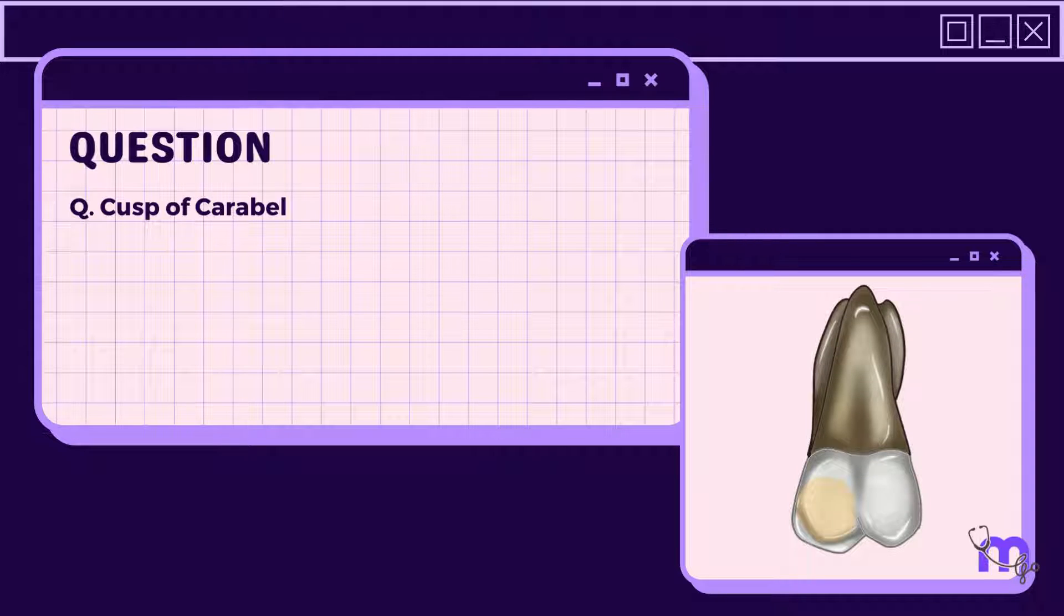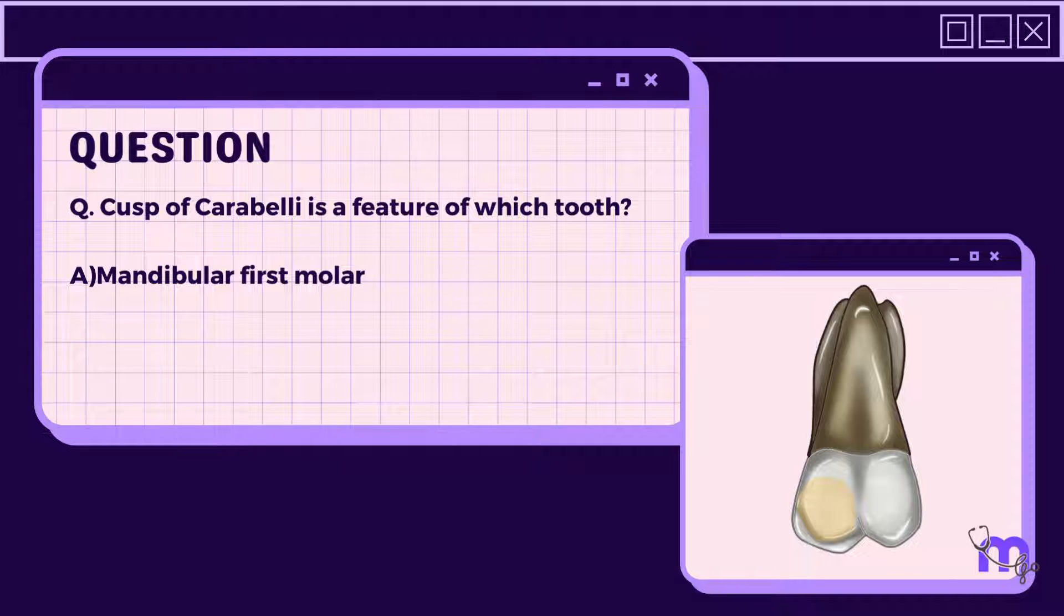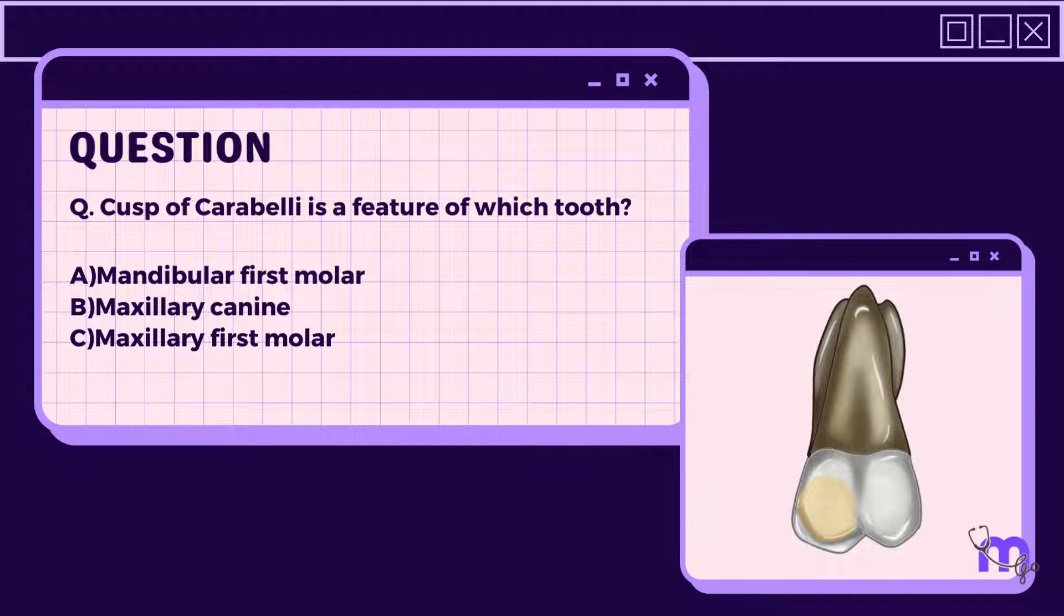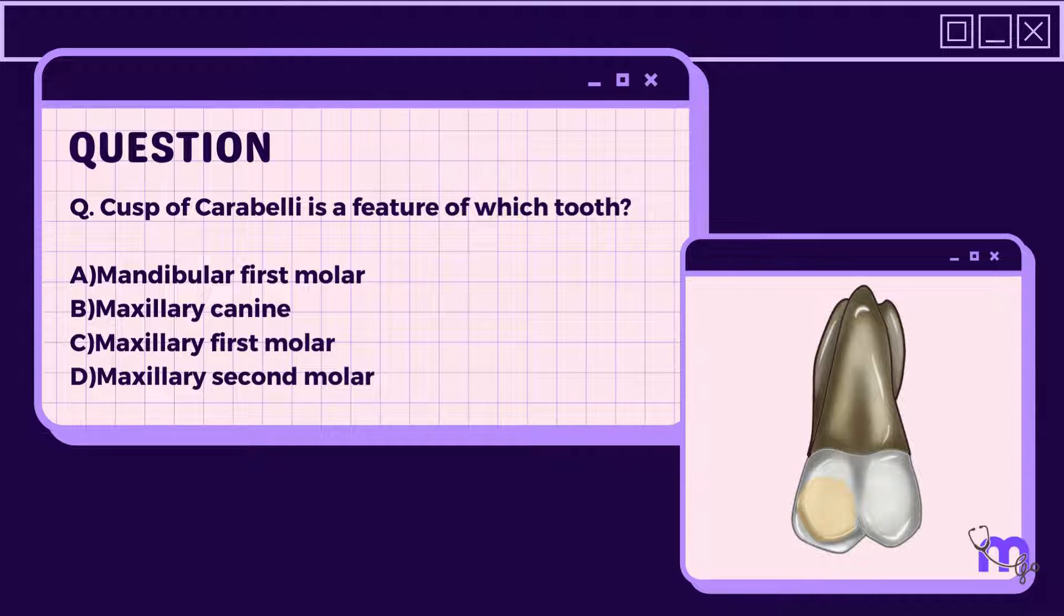Cusp of Carabelli is a feature of which tooth? A. Mandibular first molar B. Maxillary canine C. Maxillary first molar D. Maxillary second molar. The correct answer is option C.